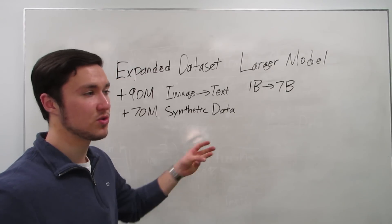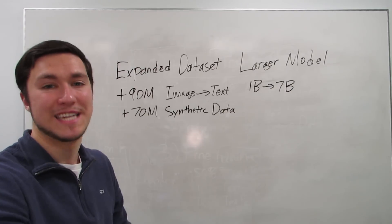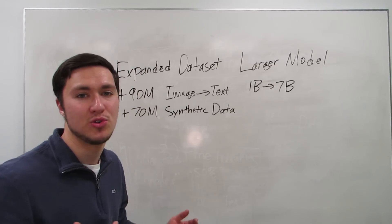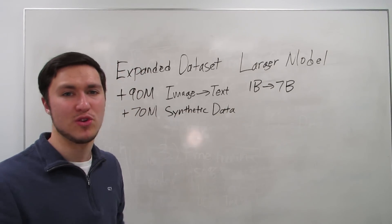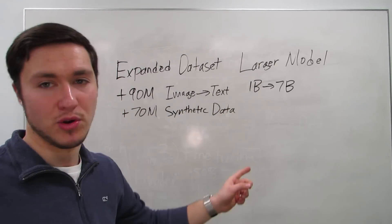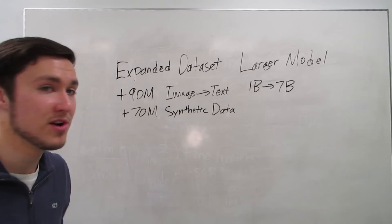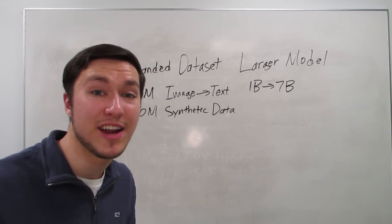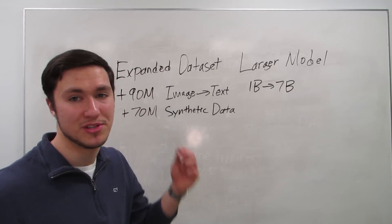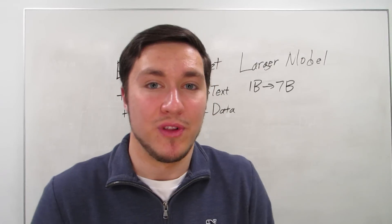By synthetic data I mean they used an AI model to generate more examples of those three data types — text-to-text, text-to-image-to-text, and image-to-text-to-text — with pieces of noise in them so they better represent the real world. They also increased the model size from 1 billion to 7 billion parameters, and as you can see in the graph, this ultimately resulted in a 10 to 20% higher accuracy just from increasing the model size — which is absolutely remarkable.